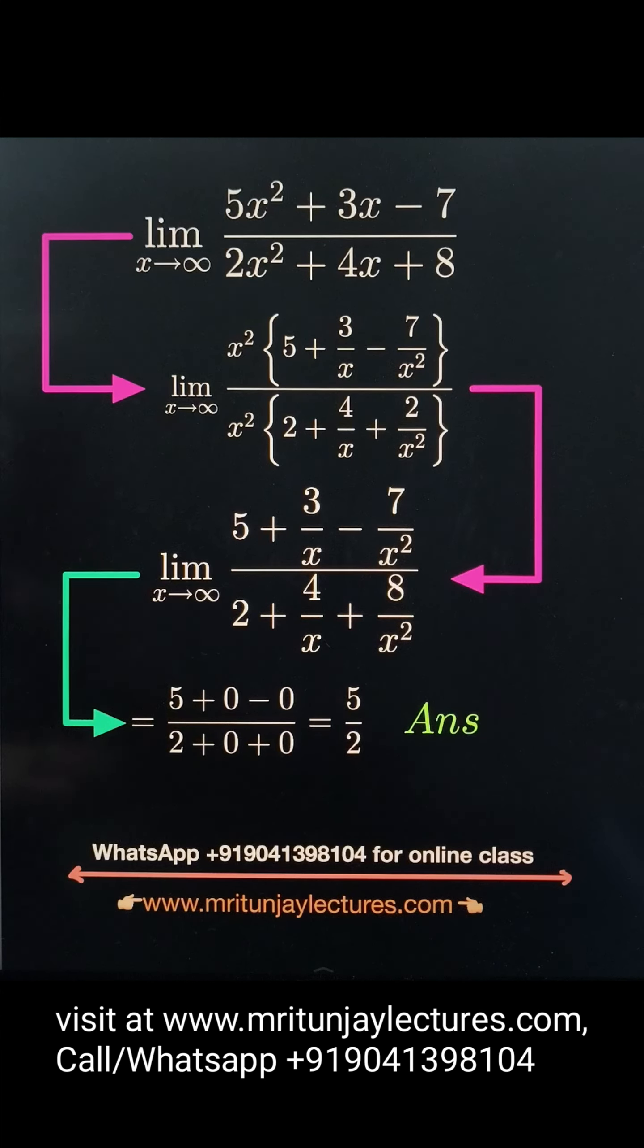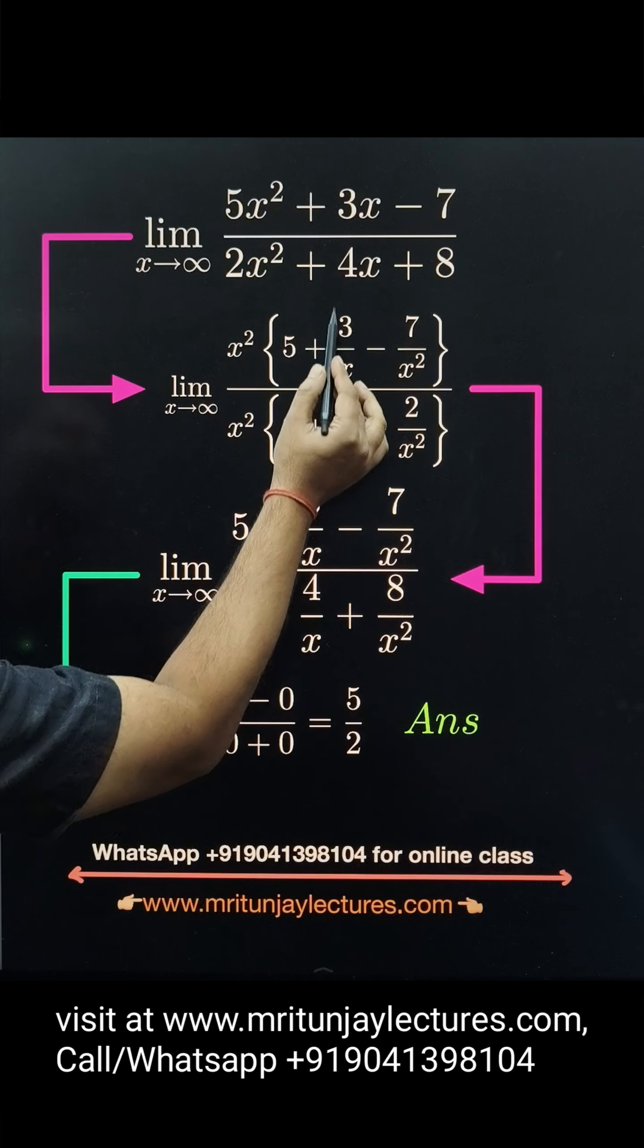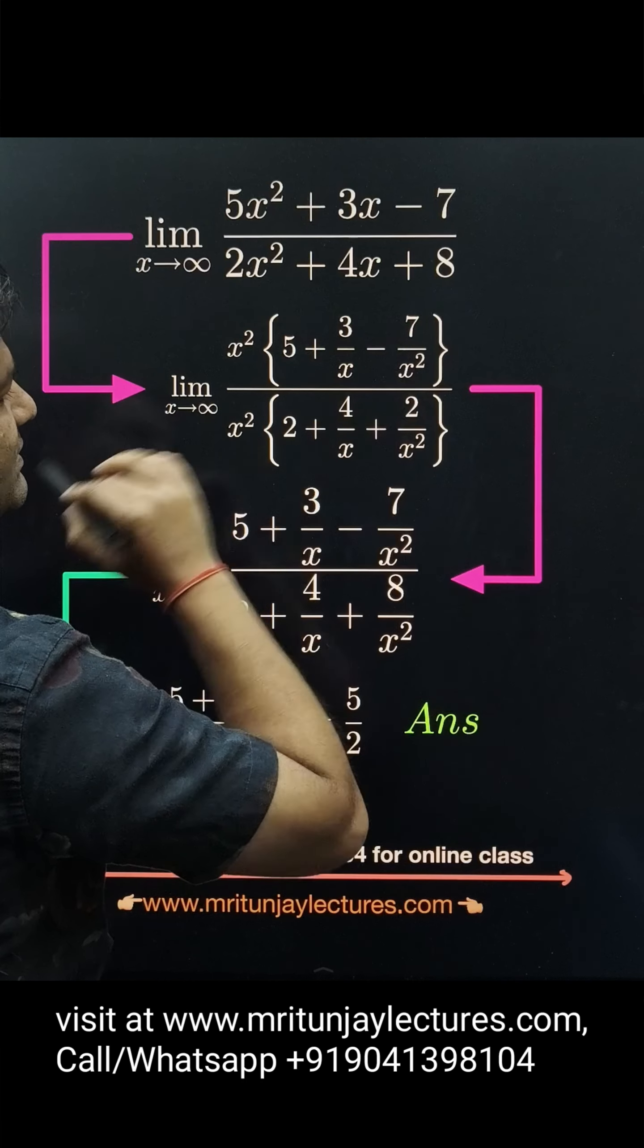If you use the conventional method, first take the highest power in the numerator, which is x², as common. So we get 5 plus 3x upon x², which is 3/x, minus 7/x².